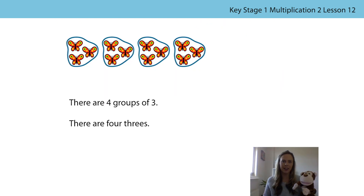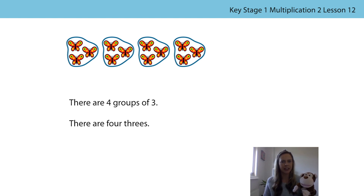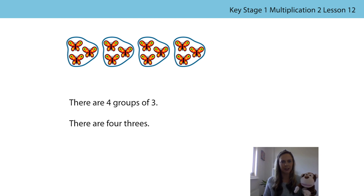Have a look at this picture — we've got some equal groups of butterflies. I'm going to read the stem sentences to describe the picture and I wonder if you can repeat them after me. There are four groups of three. There are four threes. I would like you to write down a multiplication expression that matches this picture. Remember to write your multiplication symbol correctly. Bongo is going to have a go too — pause the video and then come back to us when you've had a go.